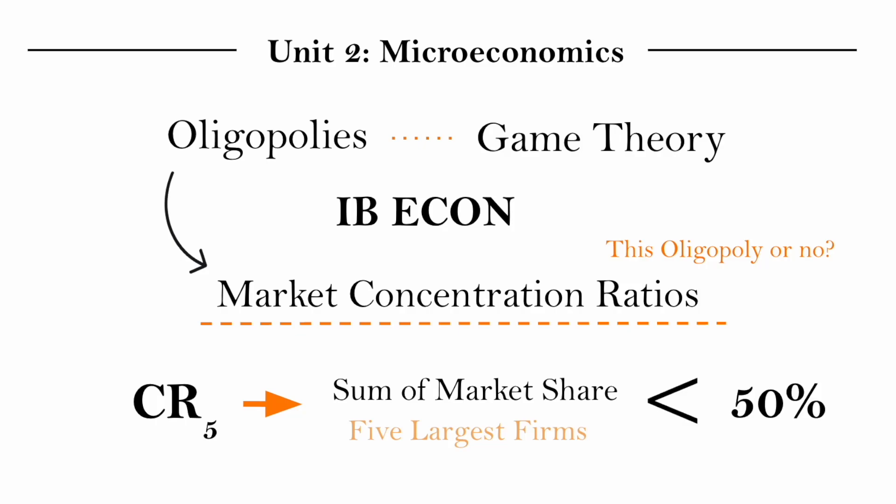Typically if the CR5, so the sum of the five largest firms' market share, is greater than 50 percent, so greater than half the entire market, we would classify this as an oligopoly. The usual standard would be if five or less firms than that held more than half the market share.